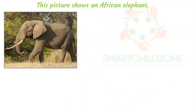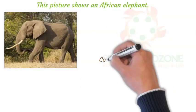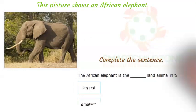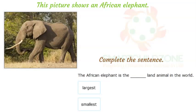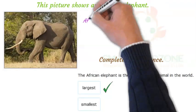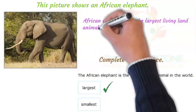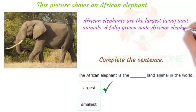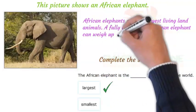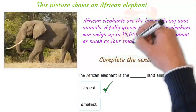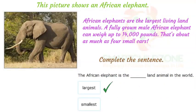This picture shows an African elephant. Complete the sentence. African elephants are the largest living land animals. A fully grown male African elephant can weigh up to 14,000 pounds — that's about as much as four small cars.